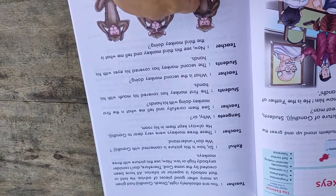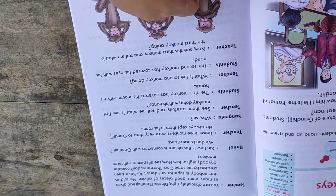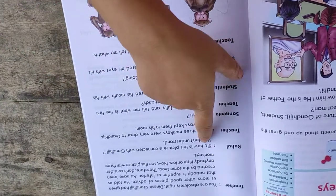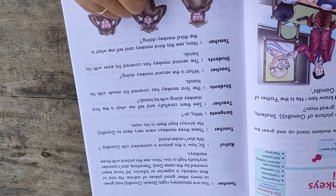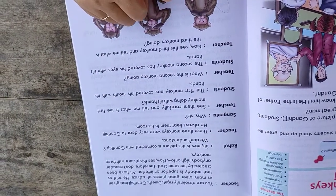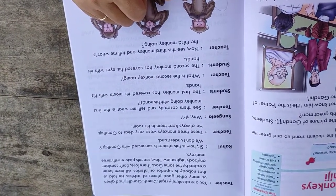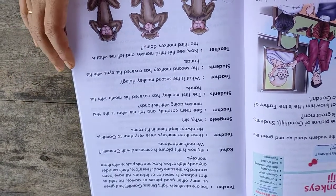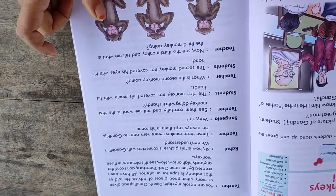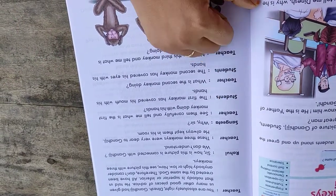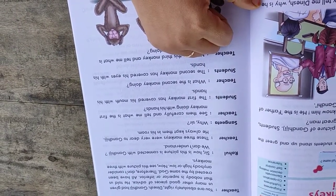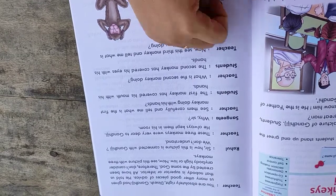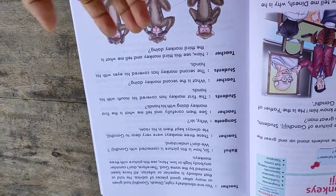Rahul asks, Sir, how is this picture connected with Gandhiji? We don't understand. Then the teacher says, these three monkeys were very dear to Gandhiji. He always kept them in his room.